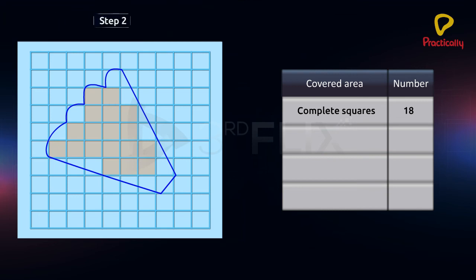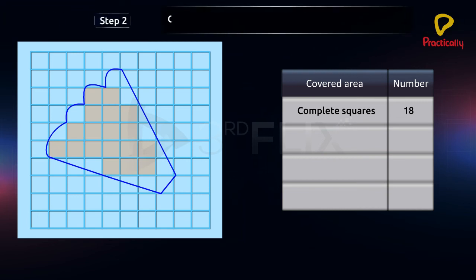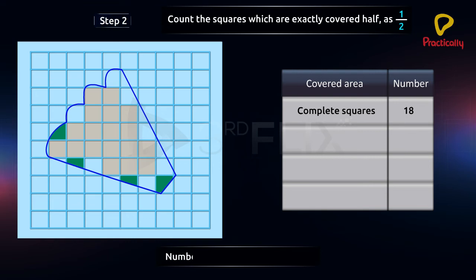Step 2: Count the squares which are exactly covered half as 1 by 2. Color the half squares green. Number of half filled squares is equal to 4.